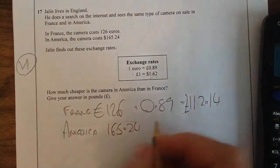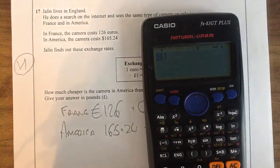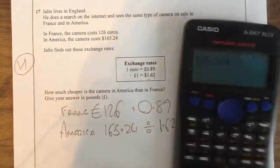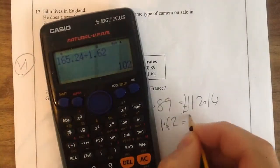We're doing dollars to pounds, so we need to divide that by 1.62. So we've got 165.24 divided by 1.62, which equals £102.